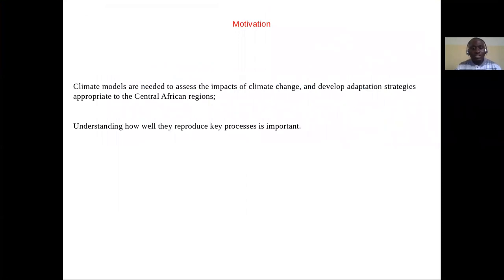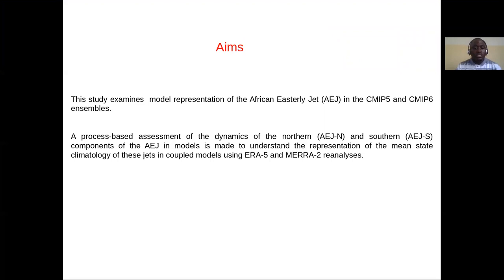Climate models are needed to assess the impact of climate change and to develop adaptation strategies appropriate to the Central Africa region. Understanding how well these models reproduce key processes is very important. This study examined model representation of the Africa East Allegiance in CMIP5 and CMIP6 models, with a process-based assessment using ERA5 and MERRA-2 reanalysis.